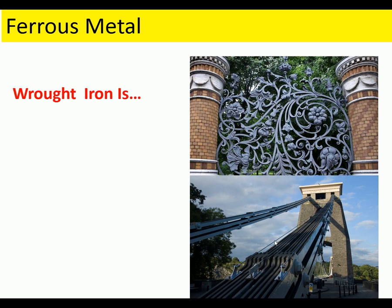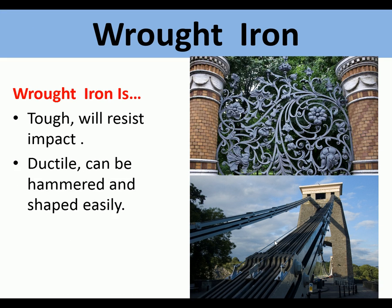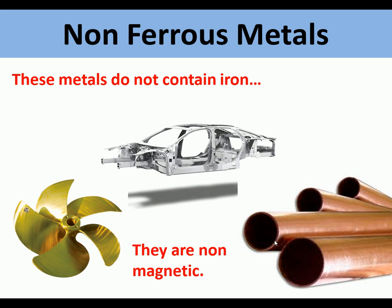Wrought iron is tough and will resist impact. It is ductile and can be hammered and shaped easily. It is also resistant to rusting and is used for gates and railings.